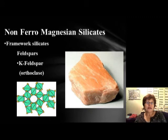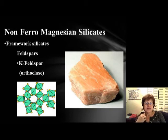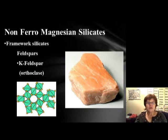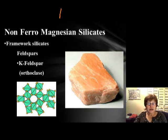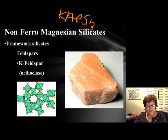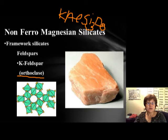The next group of non-ferro-magnesium silicates is the feldspars — framework silicates. The first is K-feldspar, also called orthoclase. Orthoclase most of the time has a pink color, but it can range from colorless or white to reddish-brownish. The formula is K(AlSi3O8) — potassium aluminum silicate. K-feldspar and orthoclase are interchangeable names, with K-feldspar indicating the potassium-containing member of the feldspar group.